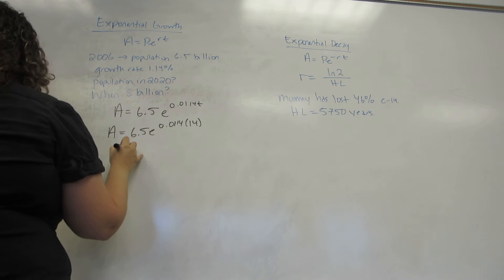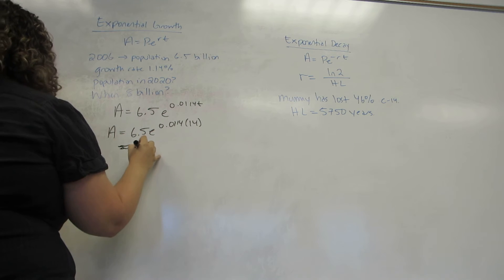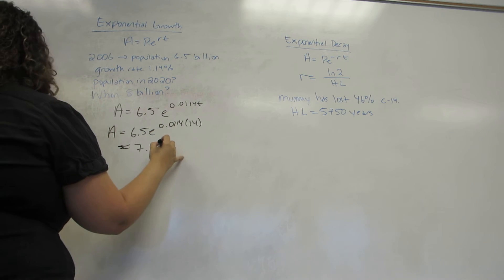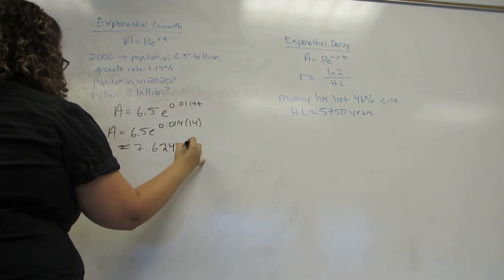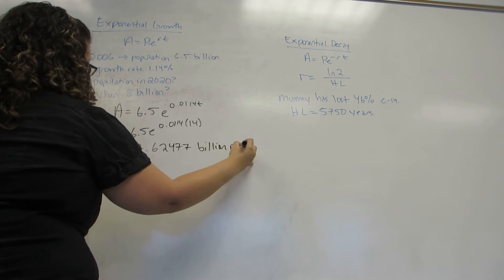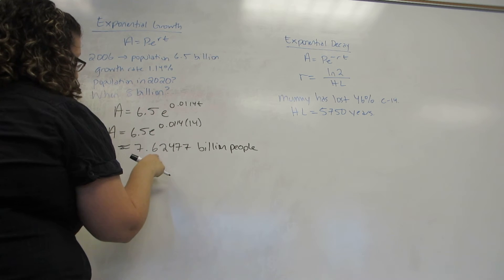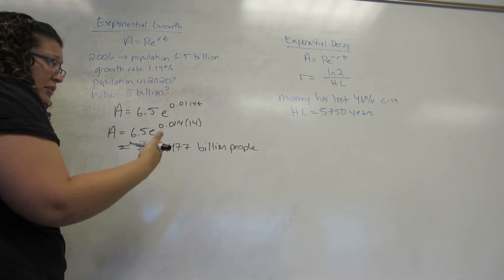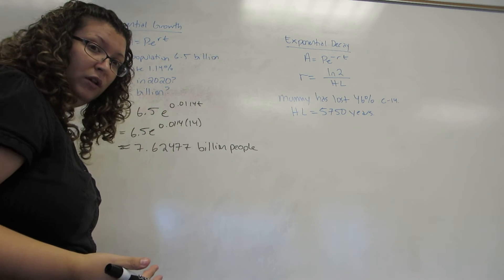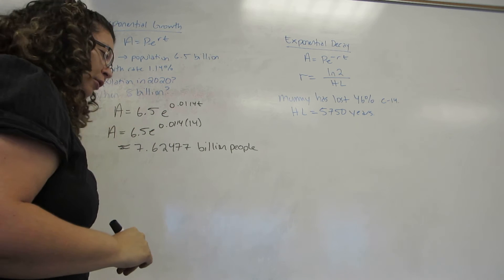I plug this into the calculator, and I get approximately 7.62477 billion people. Now, this is an approximate, both because we rounded, and because this equation is predicting how many people will live. And, of course, we can't do that perfectly accurately.